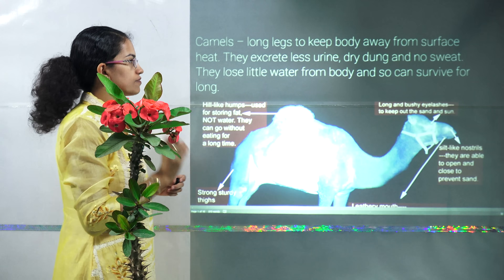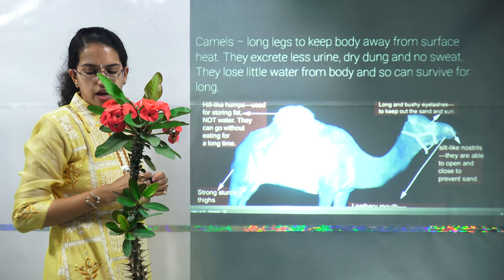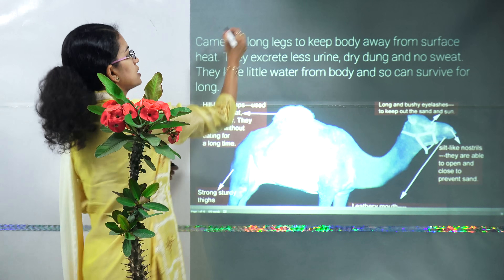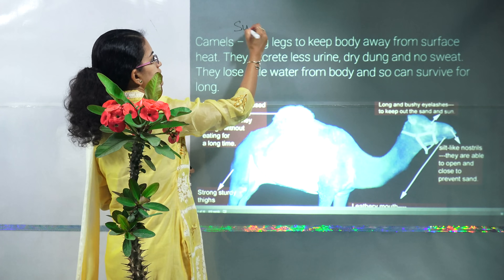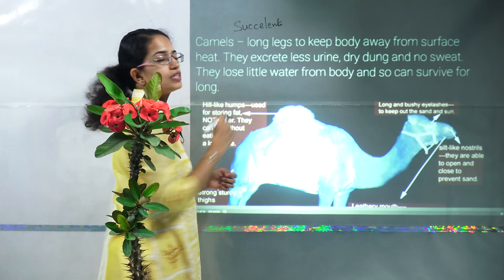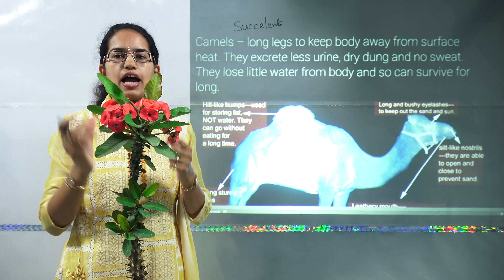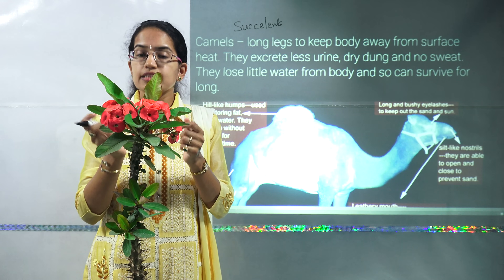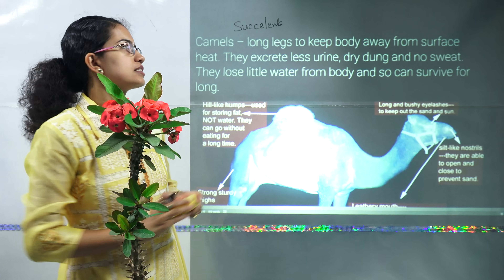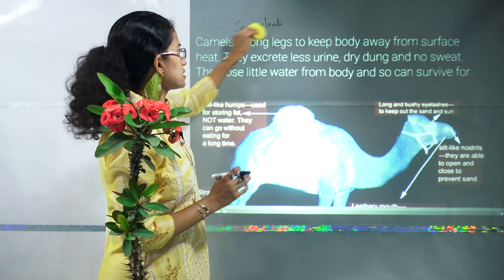Plants which survive in arid conditions are also known as succulents. Succulents are those plants which have thick stems and can survive in arid and semi-arid conditions.